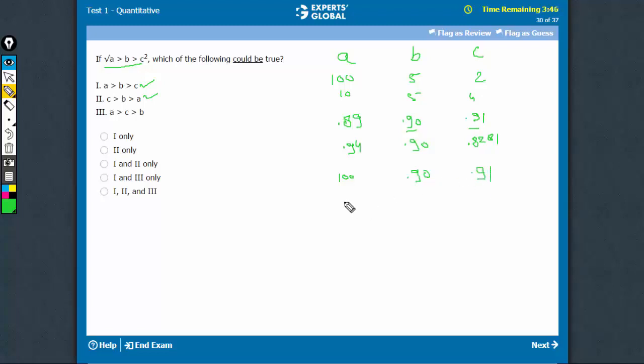So, square root a becomes 10, the greatest. b remains 0.90, but c square, 0.91 square would be 82, 81 again, 0.8281. So, this becomes the smallest.